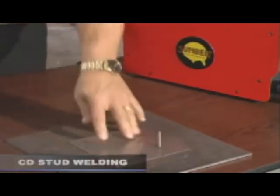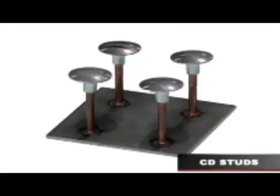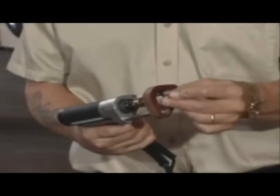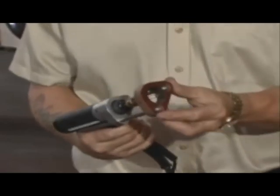Capacitor discharge CD stud welding is generally used to weld smaller diameter fasteners to thin base metals. CD stud fasteners are available in many sizes and shapes. The fastener is loaded into the welding gun and placed against the work surface.